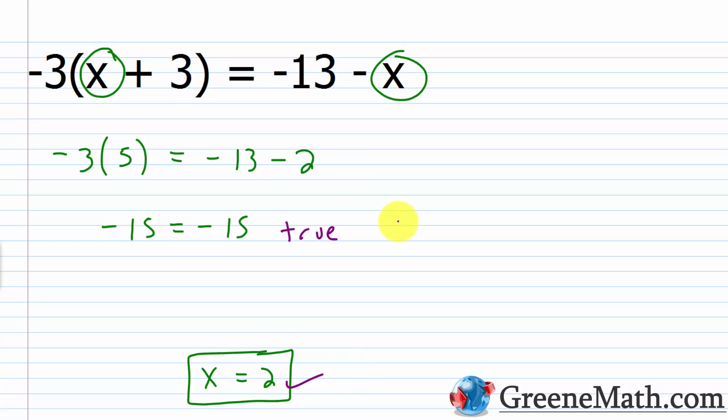But that's when x equals 2. So what if I tried a different value for x? We would see that we get a false statement. So let me erase this. And let's suppose I chose the value of -2 for x. So -3 times, you'd have -2 + 3, which is going to give me 1. This equals -13 minus a -2 is +2. So -3 times 1 is -3. -13 + 2 is -11. This is false. -3 does not equal -11.